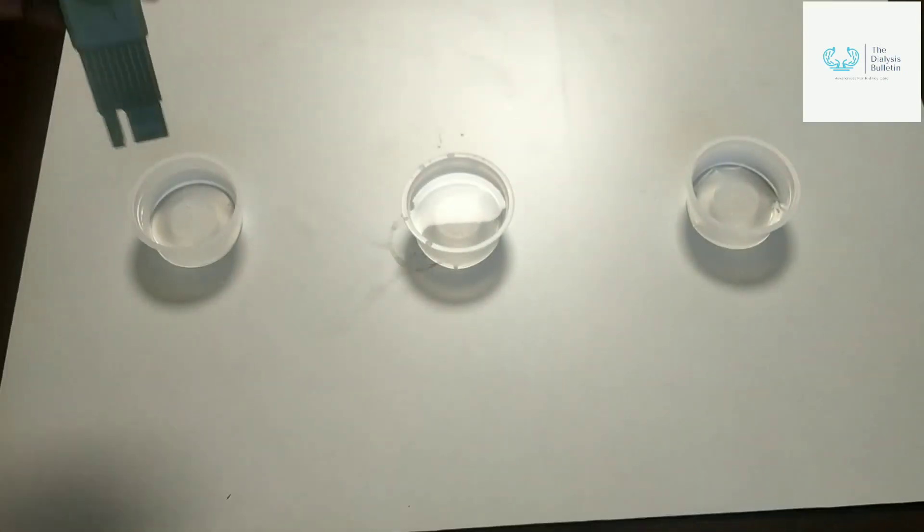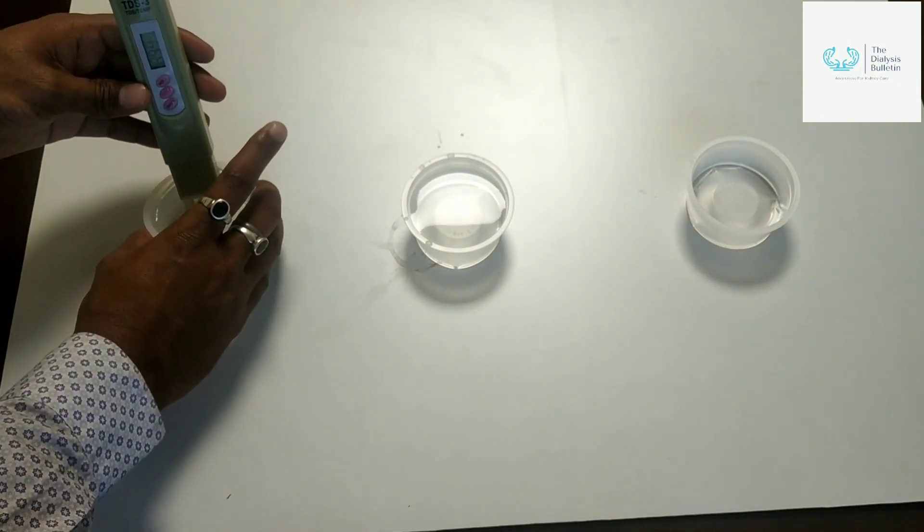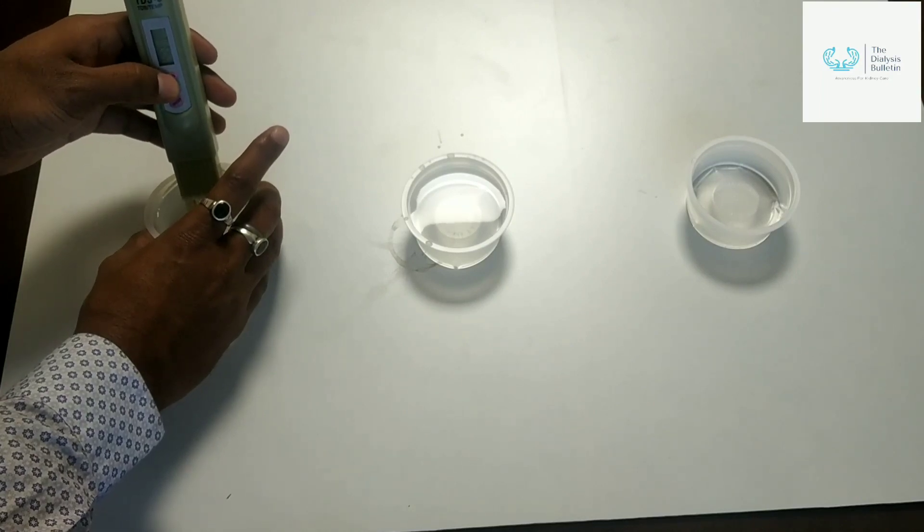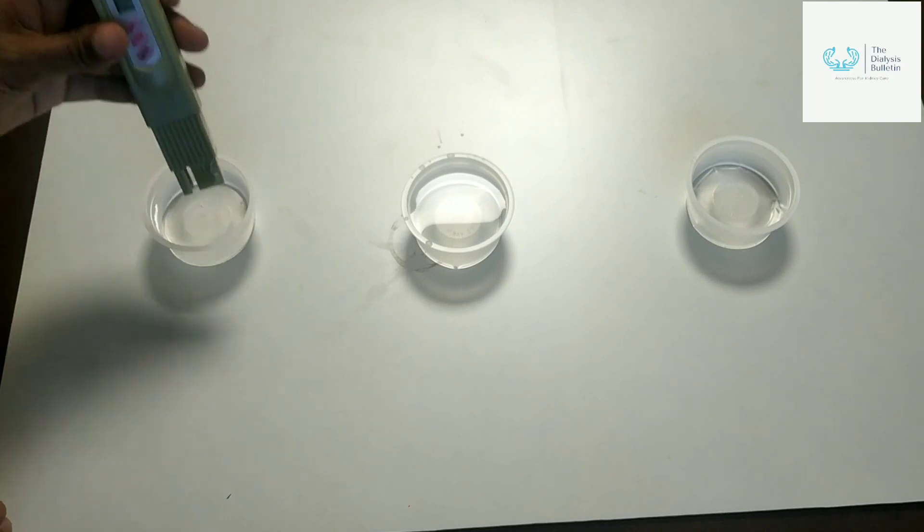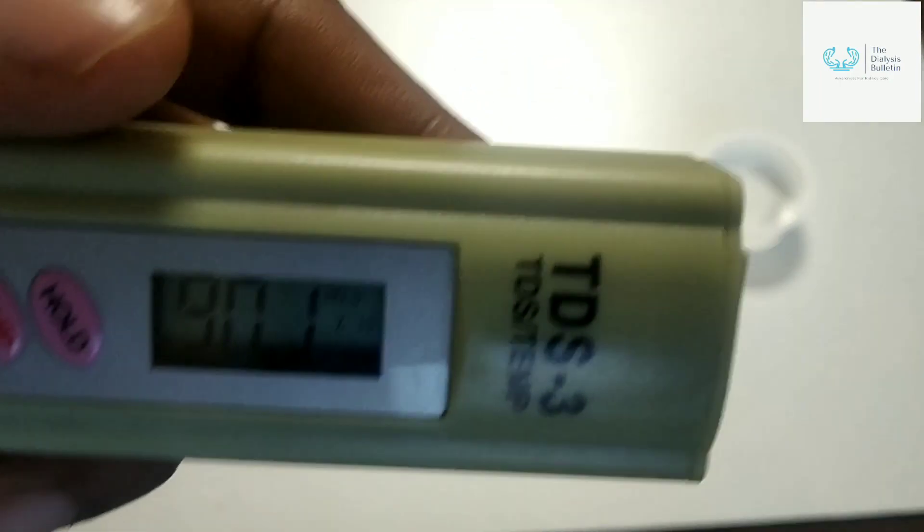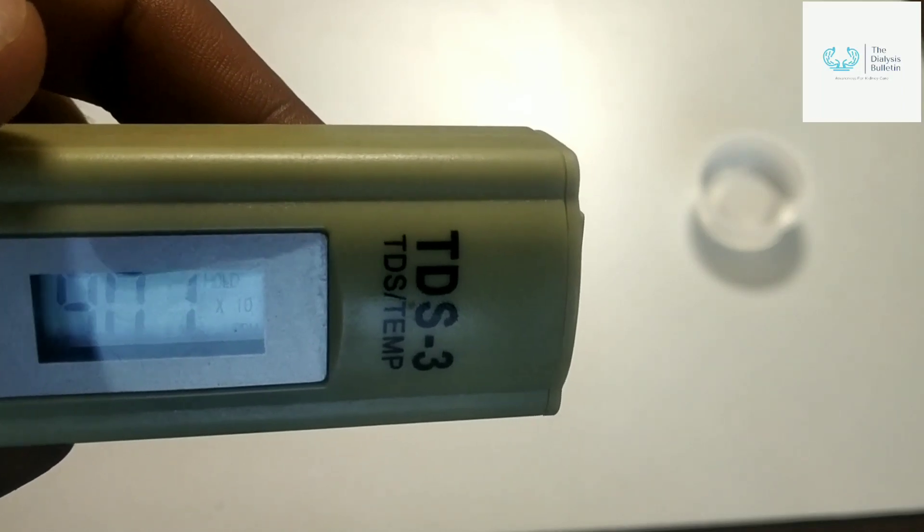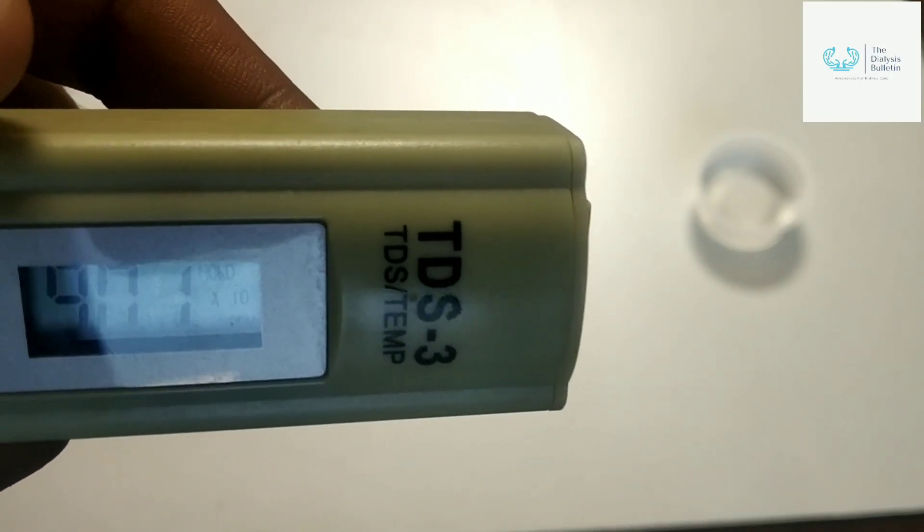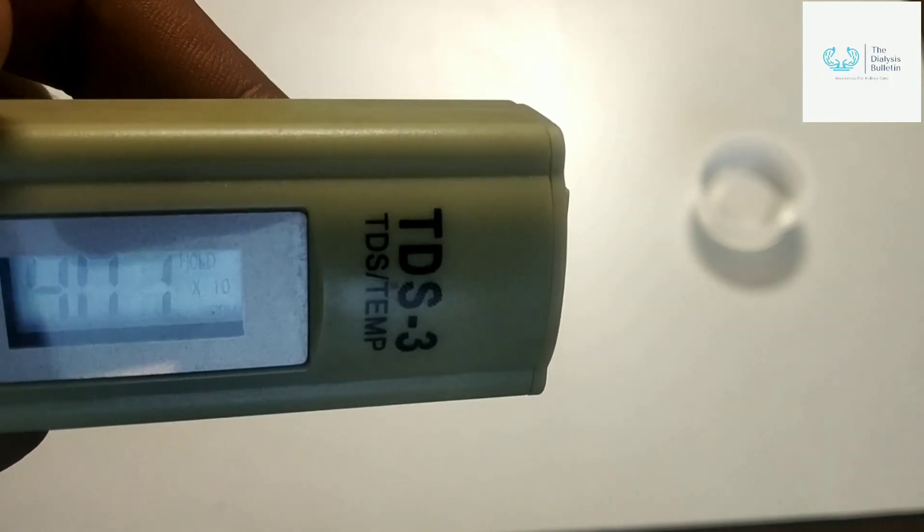Right now it's zero. You have to dip the TDS meter, and right now I am holding. So now you can see that 901 into 10 PPM, that means 9000, approximately 9000 TDS.